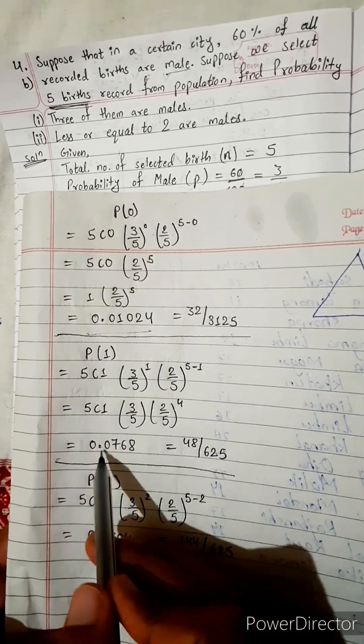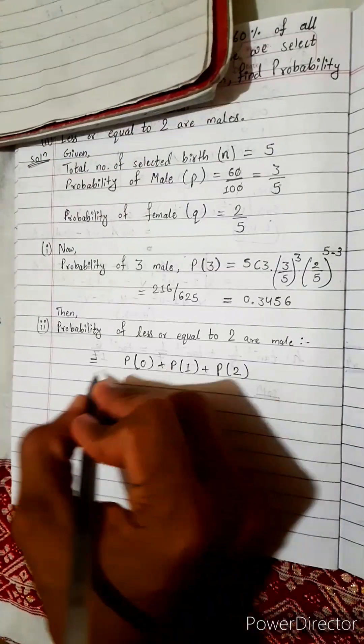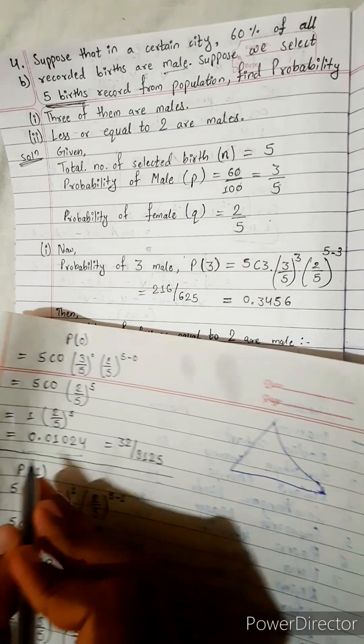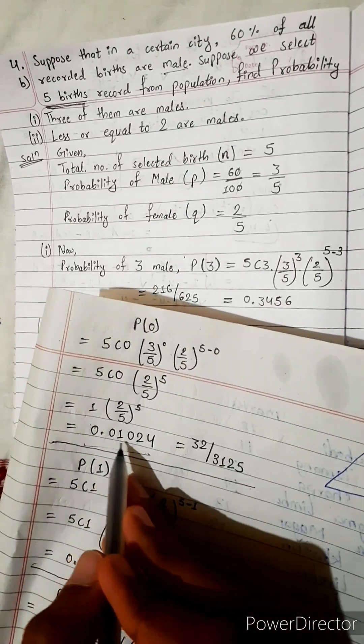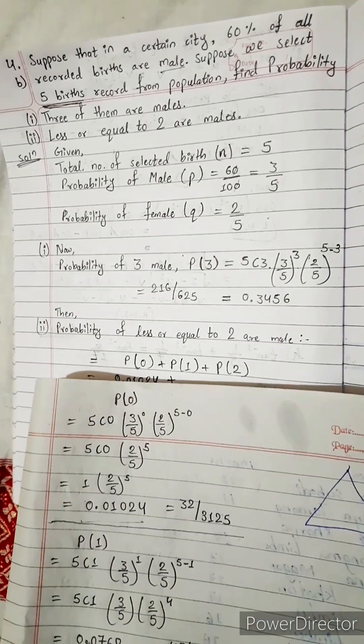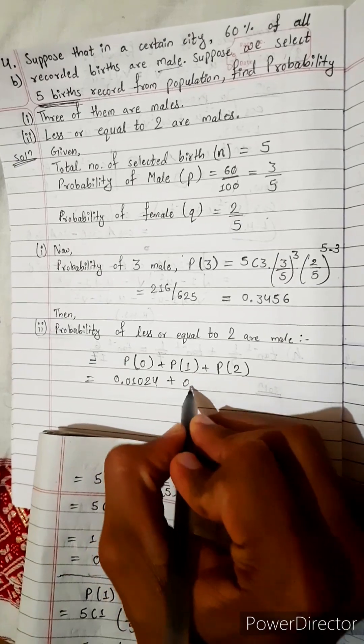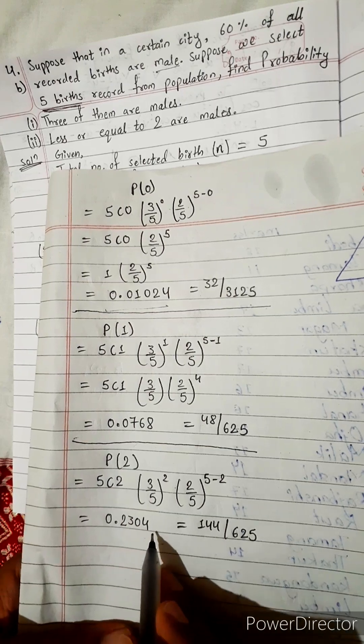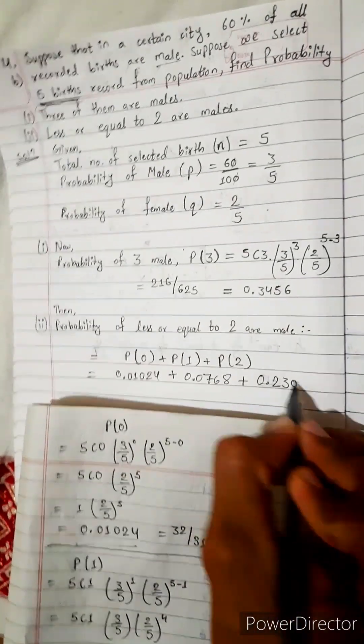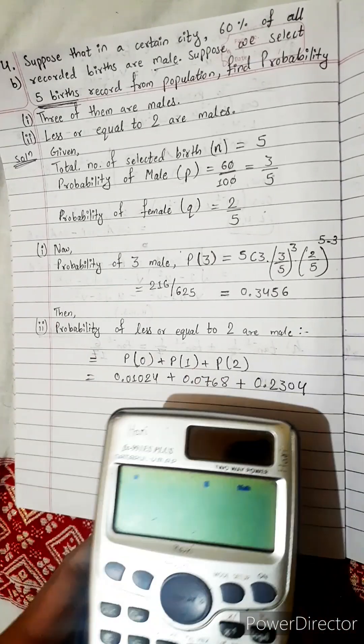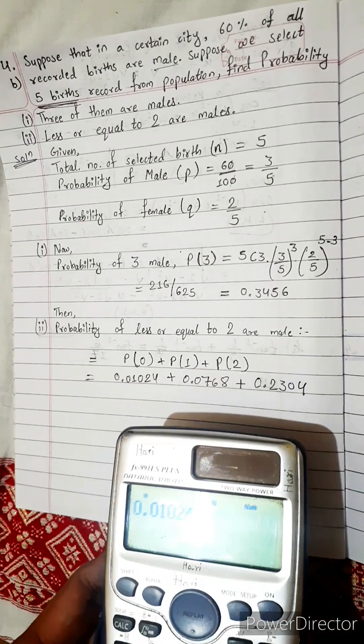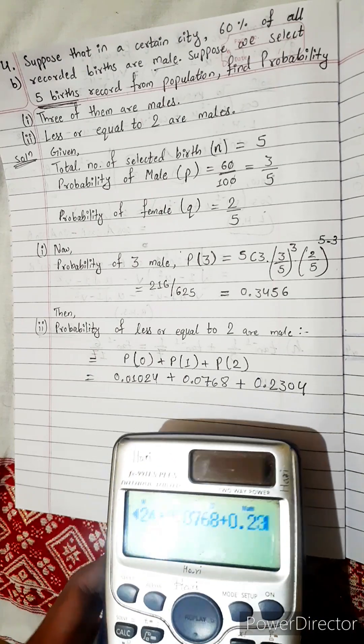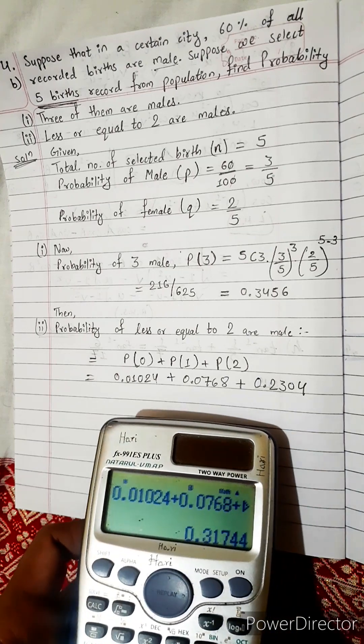P(0), P(1), P(2). We have to add. P(0) is 0.01024. P(1) is 0.0768. P(2) is 0.2304. Now let's add this: 0.01024 plus 0.0768 plus 0.2304. This is 0.31744.